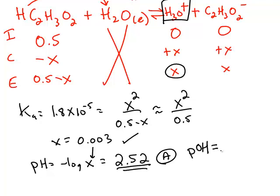pOH can be found by subtracting from 14, and you get a value of 11.48.